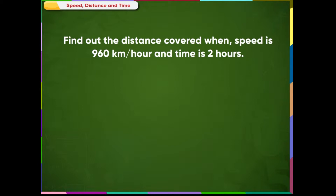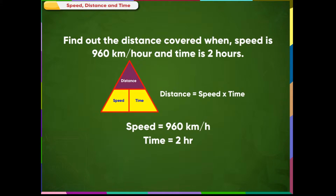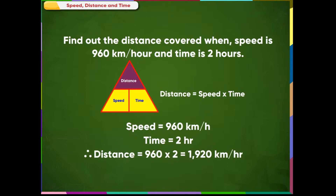Example 2: Find out the distance covered when speed is 960 km per hour and time is 2 hours. Solution: Distance equals speed multiplied by time. Speed = 960 km per hour, Time = 2 hours. Therefore, Distance = 960 multiplied by 2 = 1920 km.